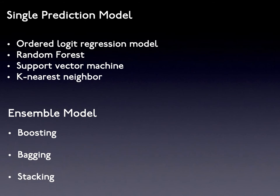After finishing the preparation of data, it is time to start the machine learning process. We first divide the dataset into a training set occupying 75% and a testing set occupying 25%, and train the models through a 10-fold cross-validation on the training set. Different types of single machine learning models are applied, including ordered logistic regression, random forest, support vector machine, and k-nearest neighbor models, as well as ensemble methods like boosting, bagging, and stacking.